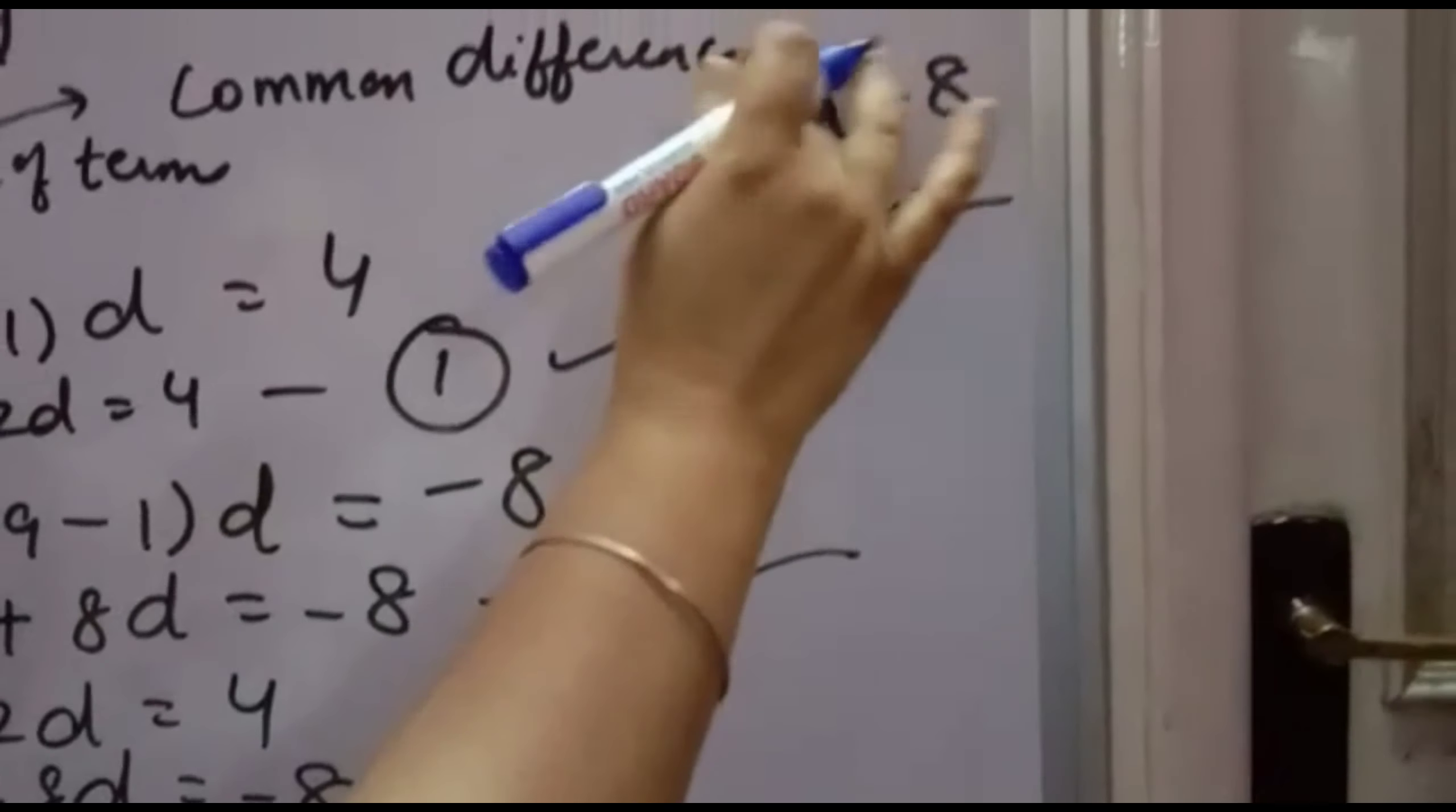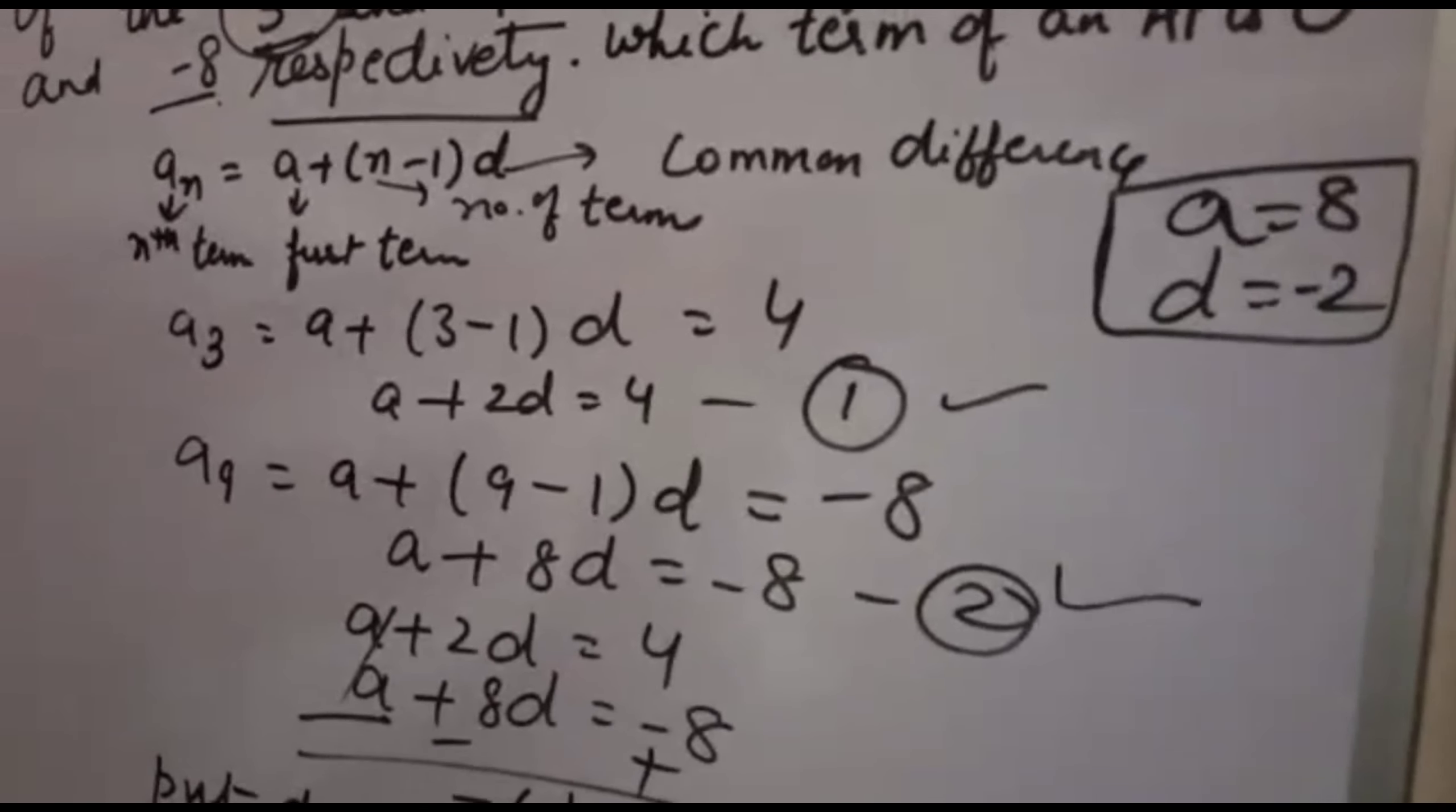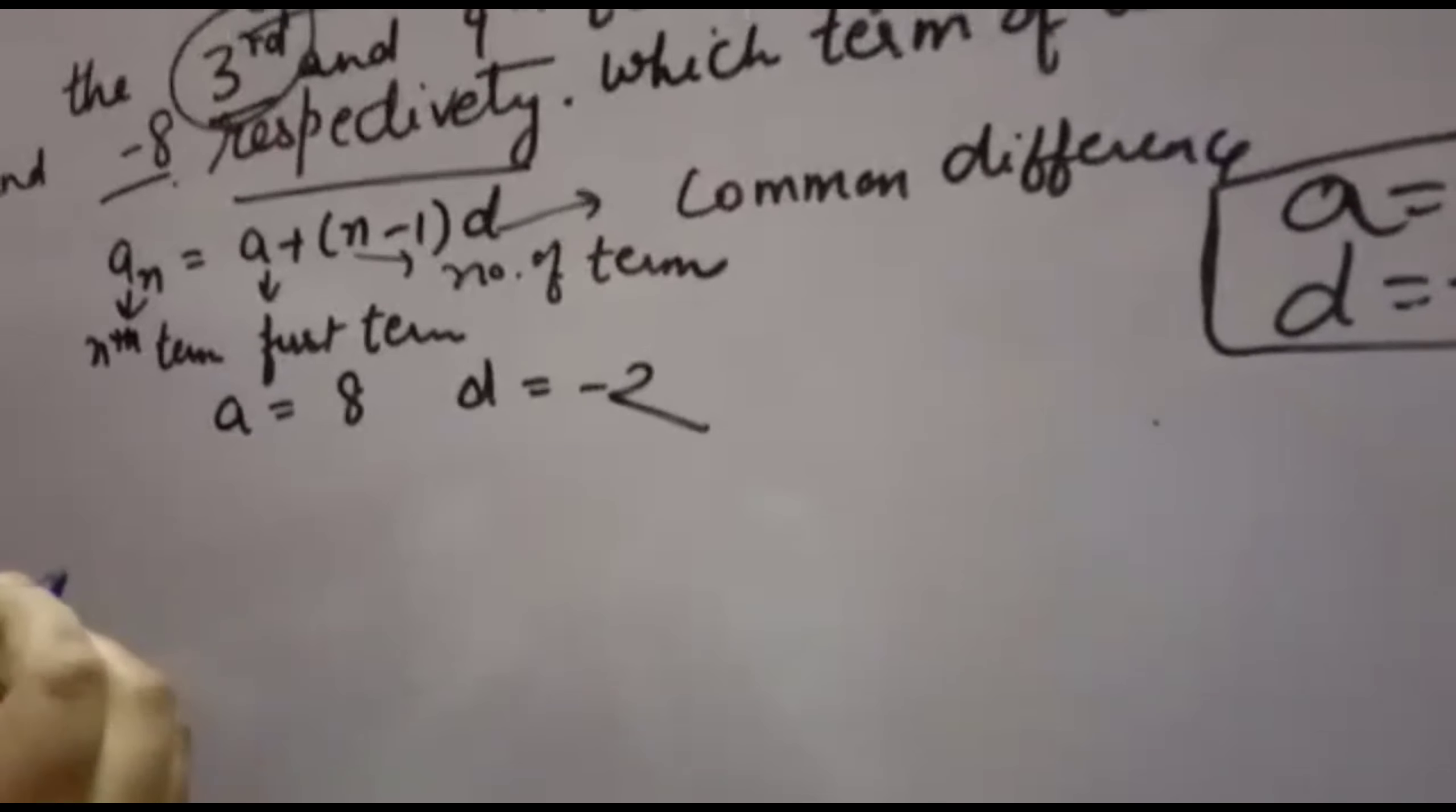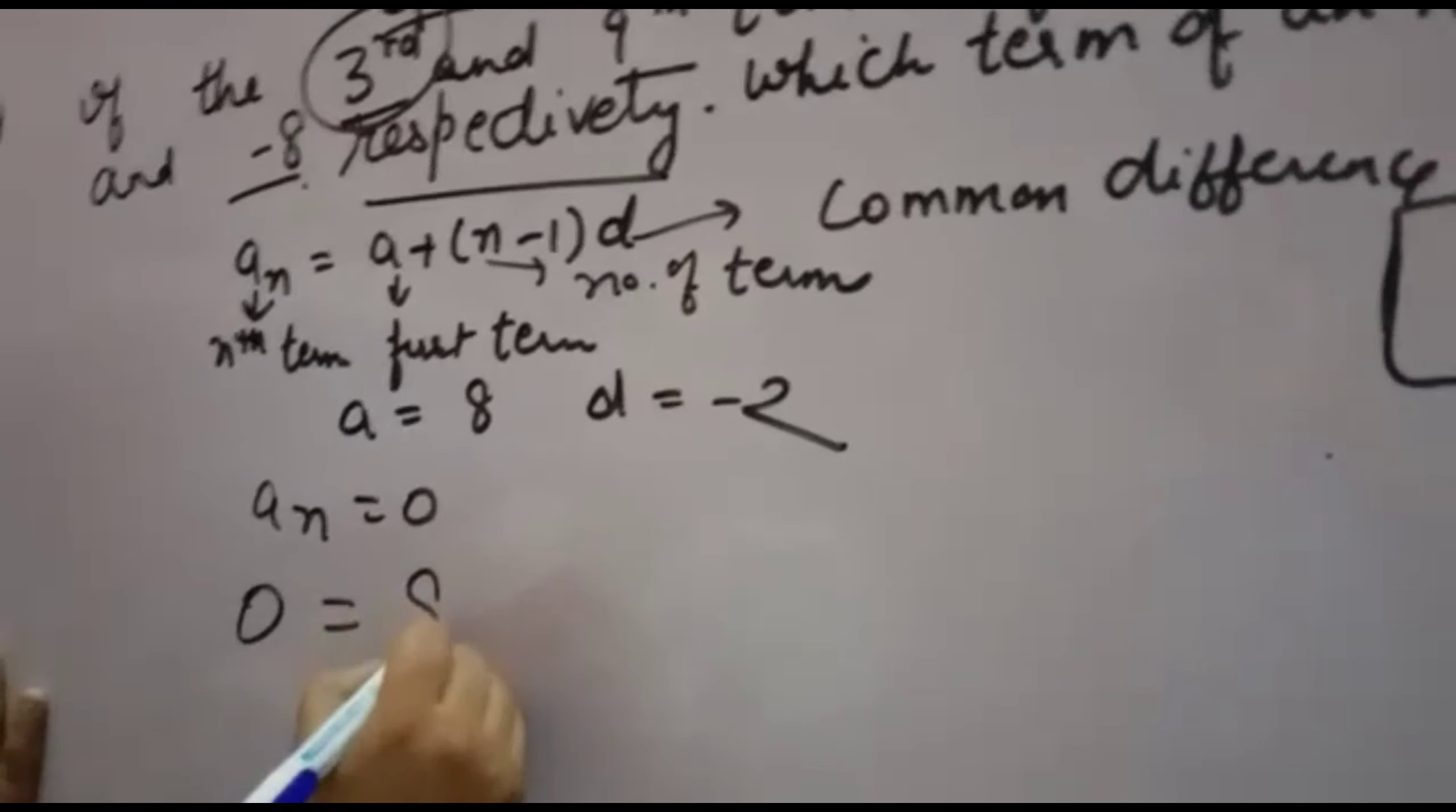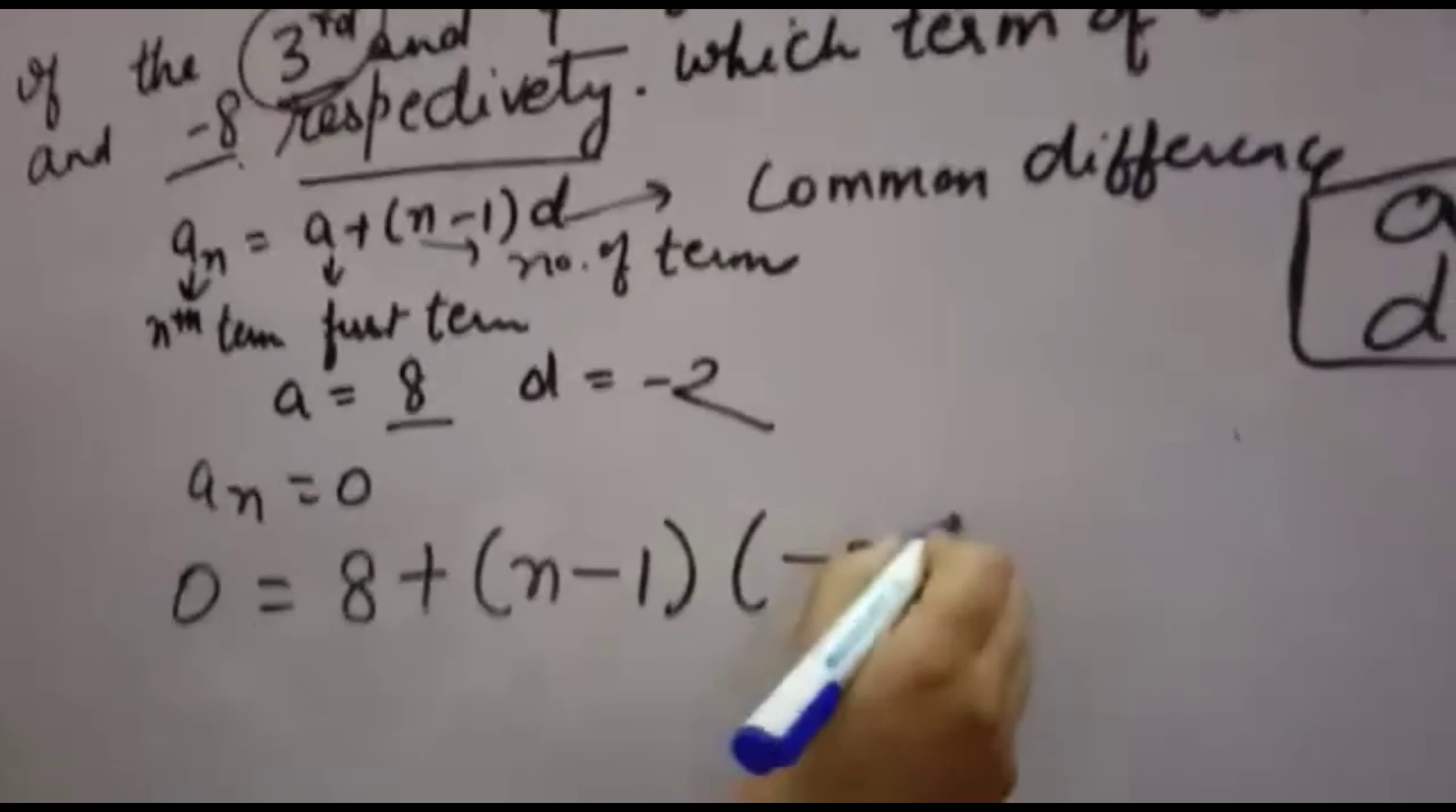So we found A = 8 and D = -2. Now we need to find which term equals 0. We need to find the value of n such that An = 0. Setting up the equation: 0 = 8 + (n-1)(-2).